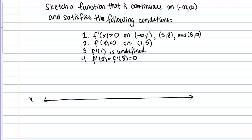I'm going to have my X values here. Just from reading the problem, there are some X values that are important — 1, 5, and 8 look like important points. I'm going to make special note of those on the number line: 1, 5, and 8, and then it keeps going.